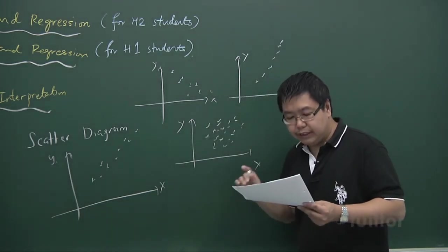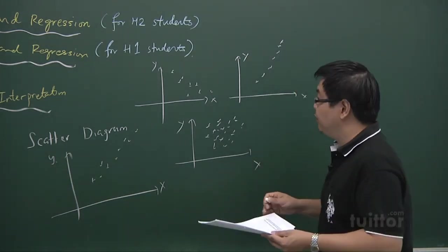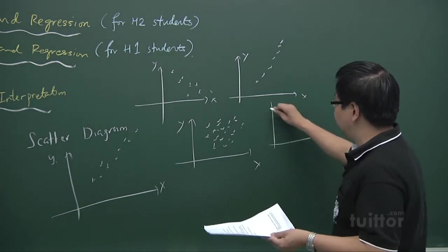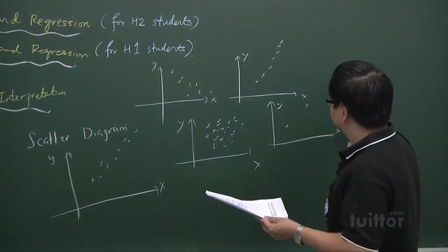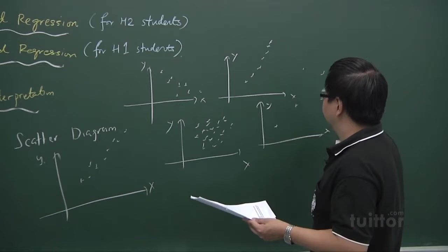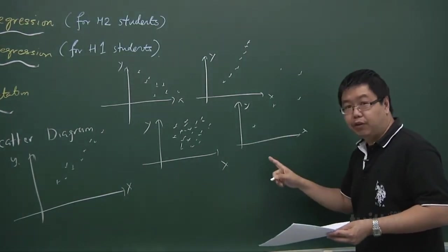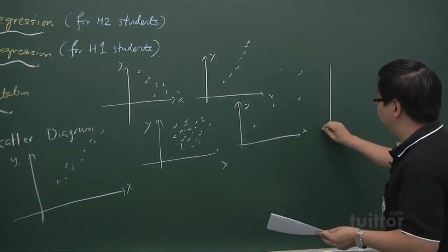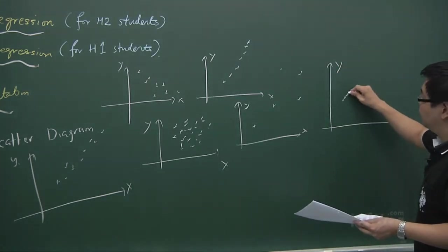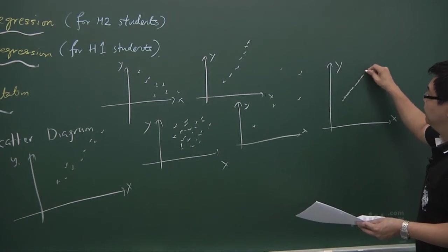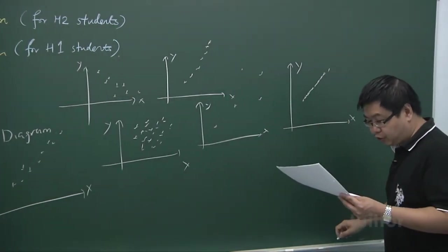And thirdly, it tells you the strength of the relationship. How do we see the strength of the relationship? If the points are scattered everywhere in this way, I would say that this relationship is not very strong compared to a situation where the points are all very close together. And this tells you that the relationship is going to be a very strong one.